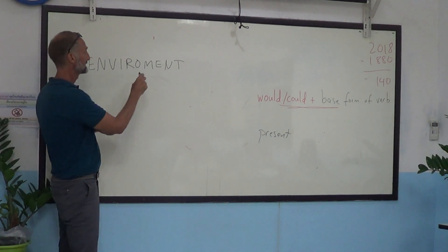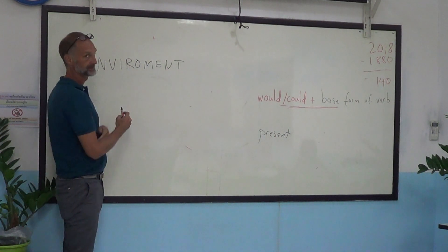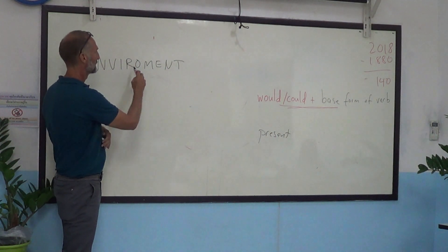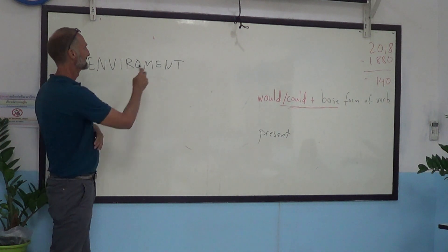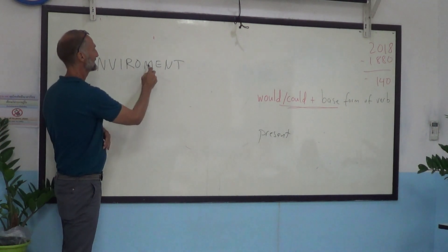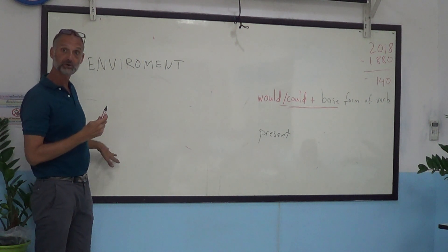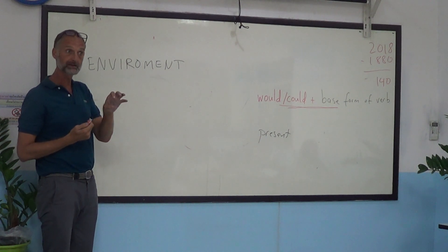So here's a word: T-E-N, ten. T-O-N, ton. T-O-N-E, tone. You make a list of words. How many words can you make?